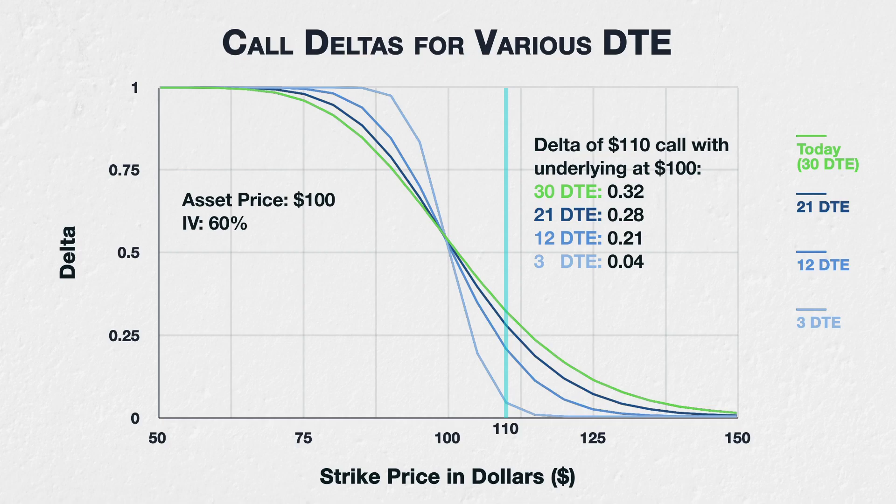Notice also how the decrease in delta is not linear — the decrease gets faster the closer we get to expiry. Each step in time is exactly 9 days, and yet the delta drops by a different amount each time. It is possible to measure this rate of change as well, but that is beyond the scope of this lecture.